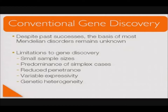Why is this so? What are the limitations to gene discovery? Small sample sizes — many of the remaining disorders are rare, and any individual investigator may not have a large enough sample. Some have a predominance of simplex cases, that is, a single occurrence within a family. There may be reduced penetrance, variable expressivity, and genetic heterogeneity, where different genes underlie a specific disorder.